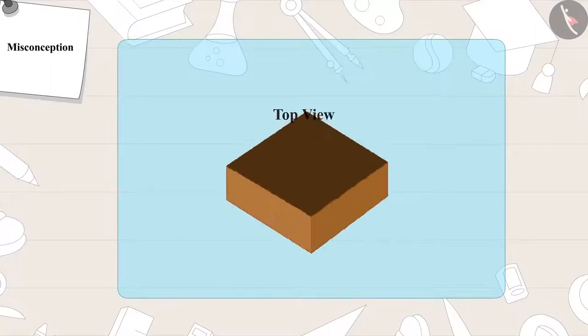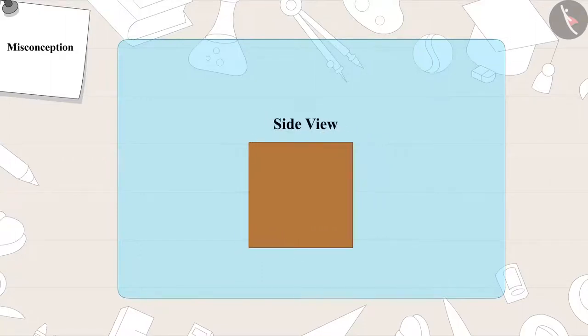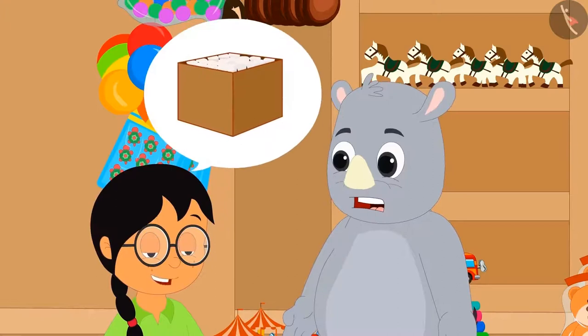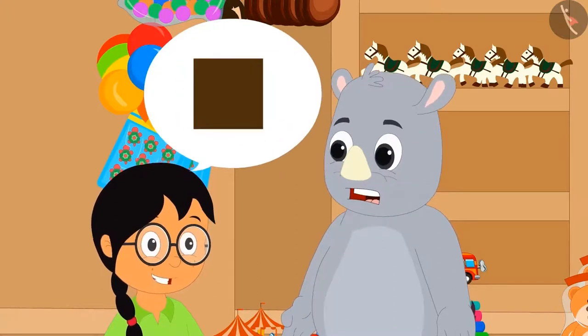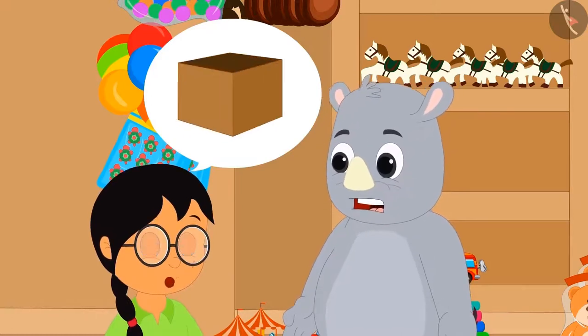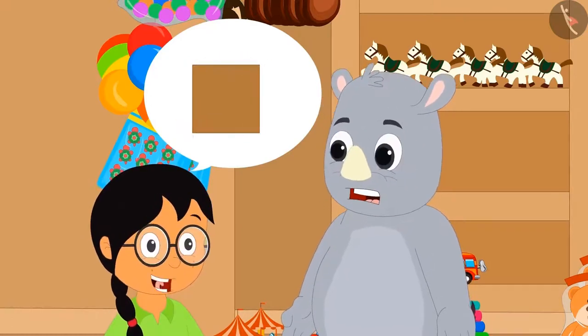The box of chalk is a square in top view, front view and side view. There are some objects whose shape from all directions - top view, front view as well as side view - appear to be the same.